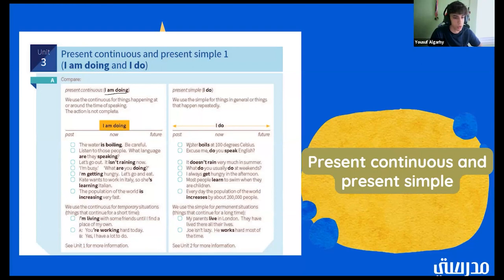So here we have our examples. Water boils at 100 degrees Celsius. Now, this is present simple because this happens every single time. And you can do this whenever you can do this in the past, the present, the future. So it happens every single time. Now we have, excuse me, do you speak English? It doesn't rain very much in the summer. What do you usually do at weekends? I always get hungry in the afternoon. Most people learn to swim when they are children. Every day, the population of the world increases by about 200,000 people.